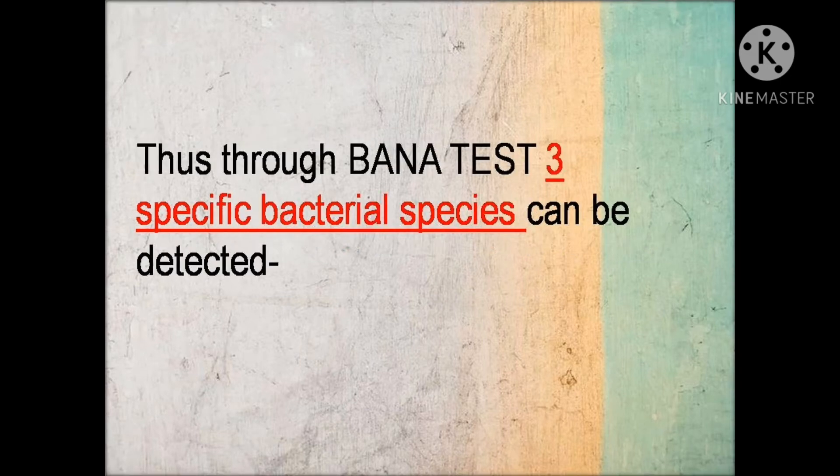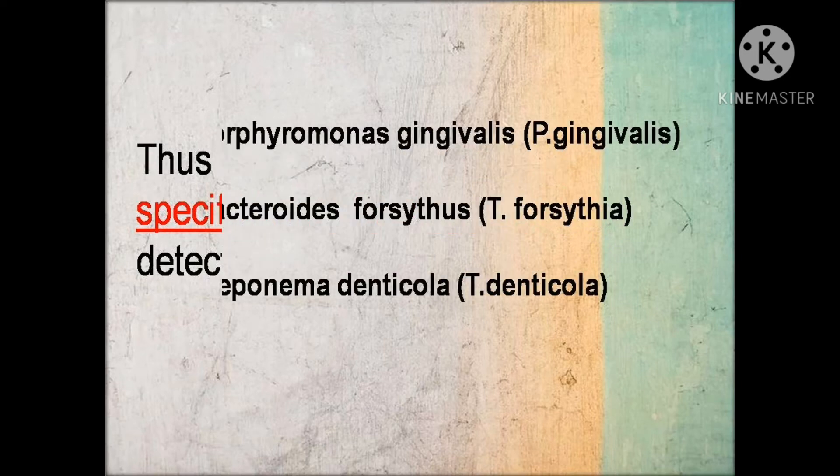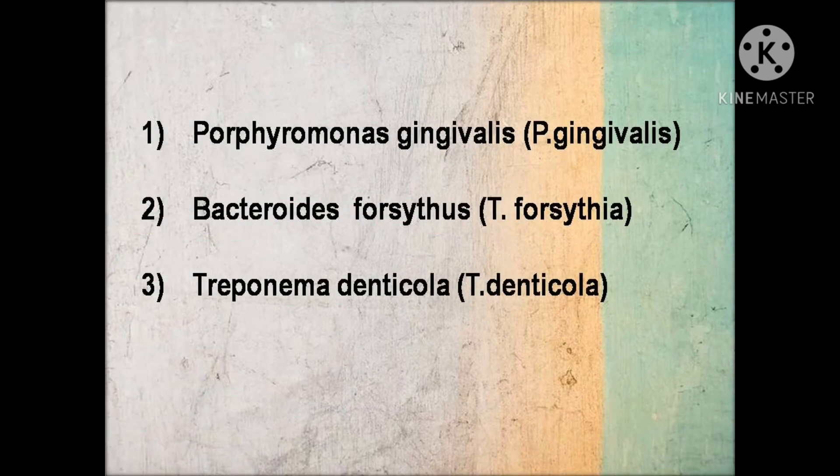Through this test, three bacterial species which have the ability to hydrolyze the synthetic trypsin substrate can be detected. The three bacterial species detected by BANA test are Porphyromonas gingivalis, Tannerella forsythia, and Treponema denticola.